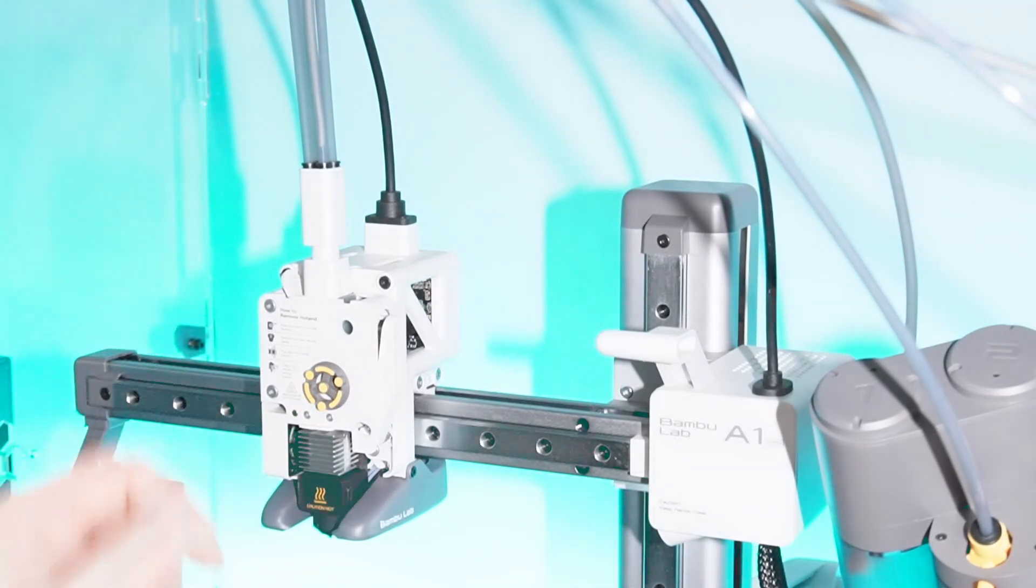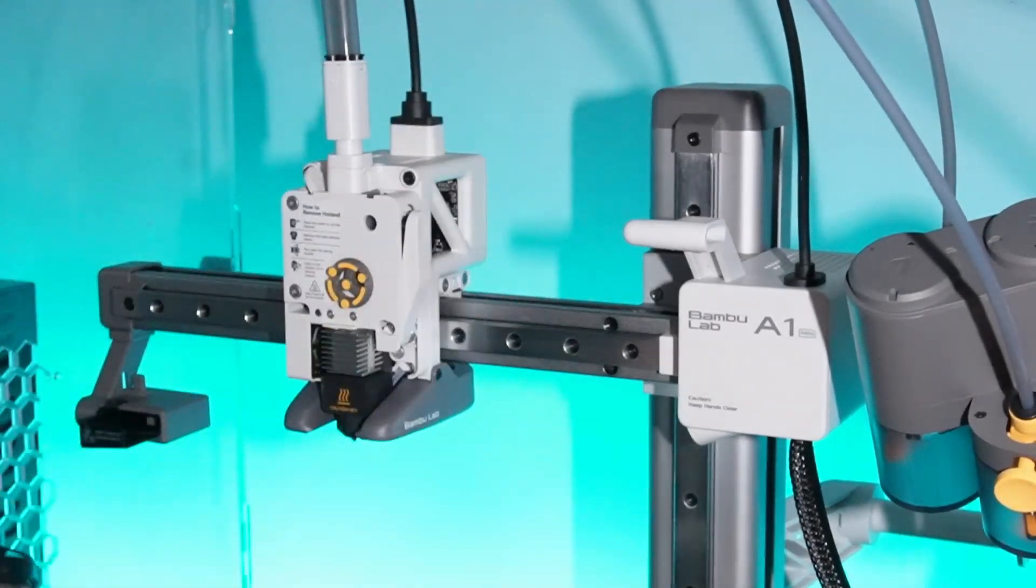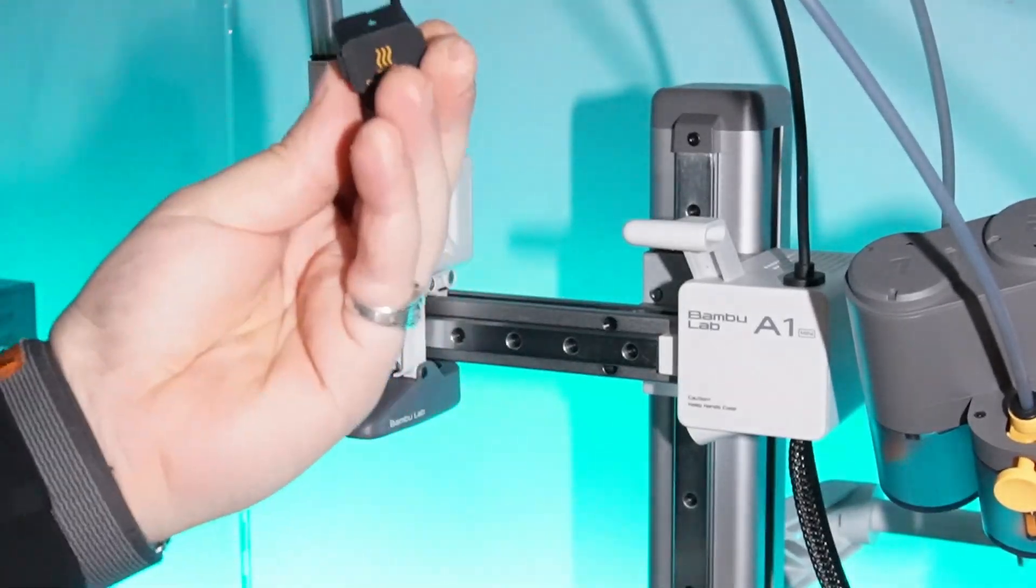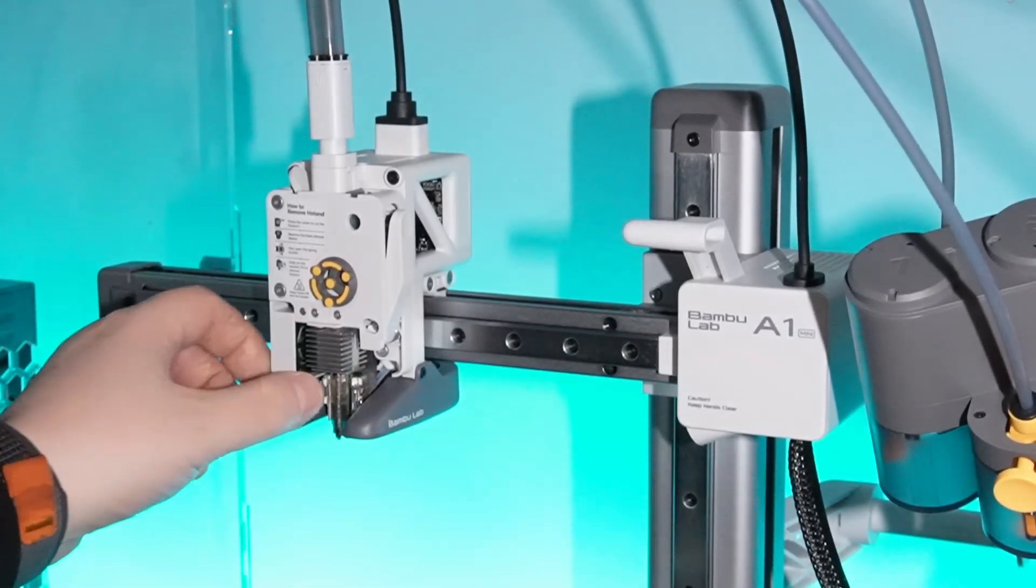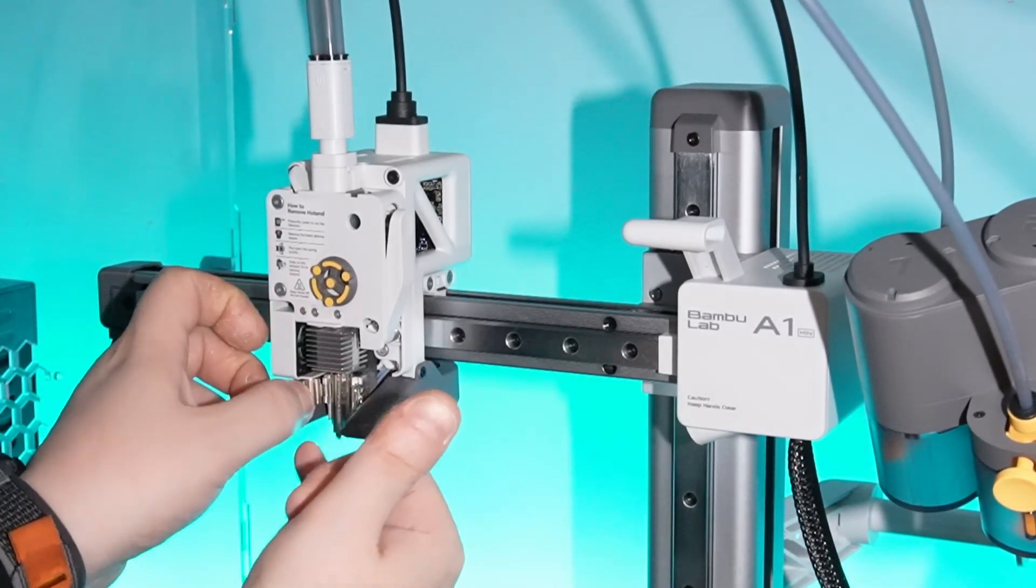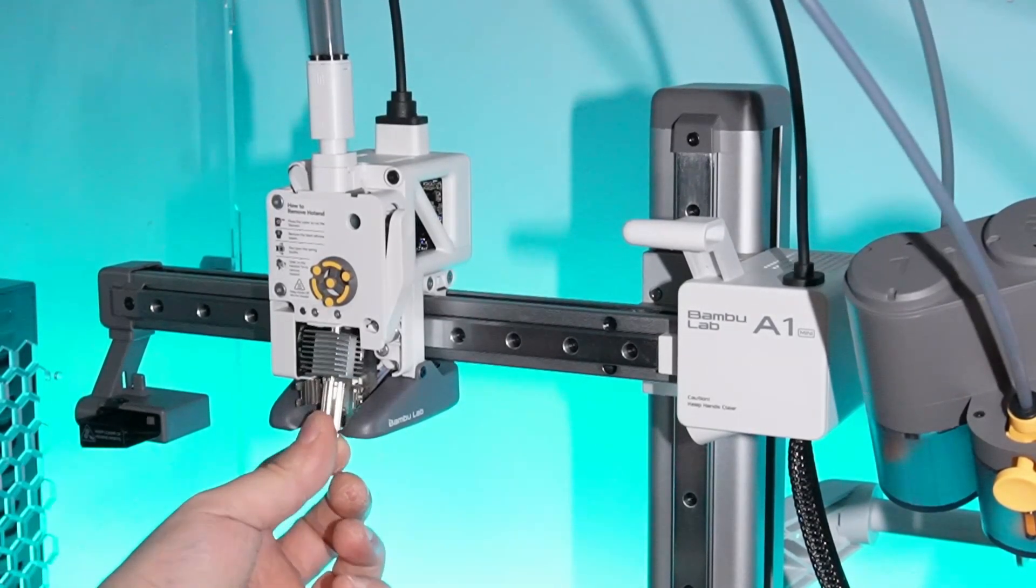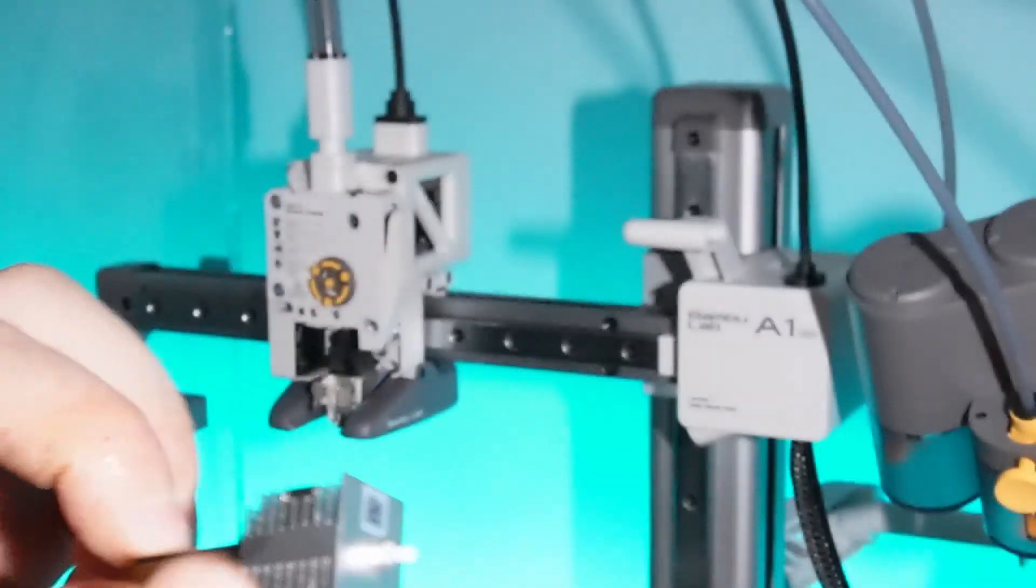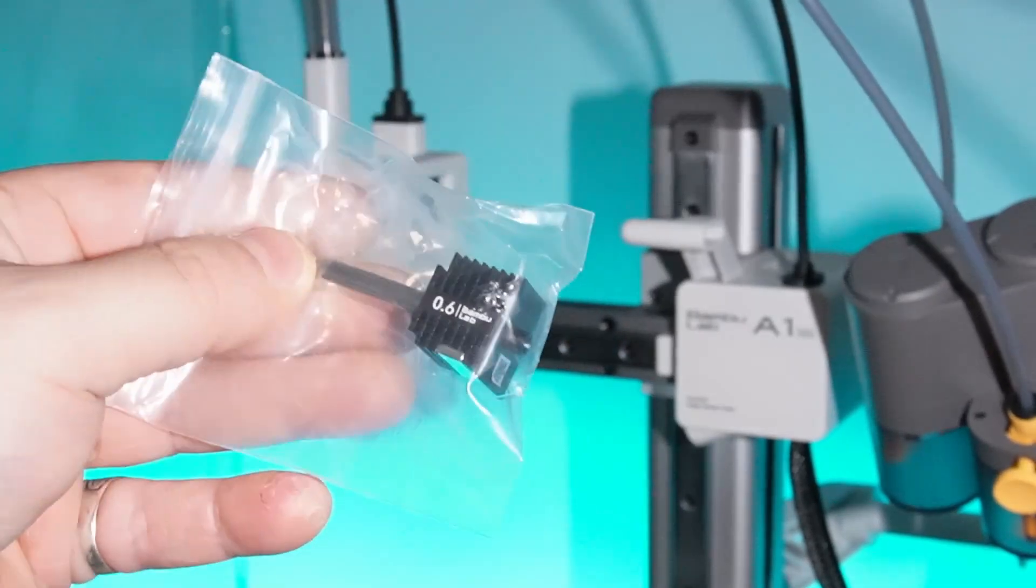To change the nozzle on the Bamboo A1 Mini, you take this part here, pull it back like this, and then you take the silicone cover off. Then you have a tab here to the right and another tab here. You pull this to the left like this, and then you take this bit of the tool head and you wiggle it a little bit to the front and it comes out. So yes, they weren't joking about it being tool-less changeable hotend.